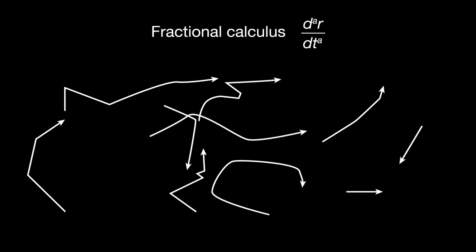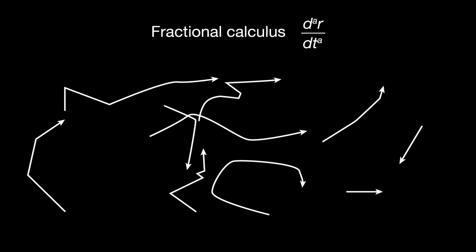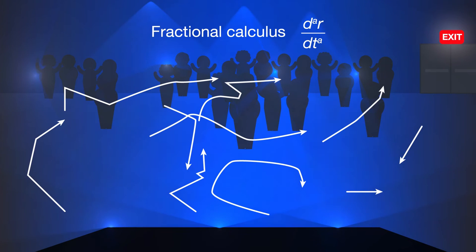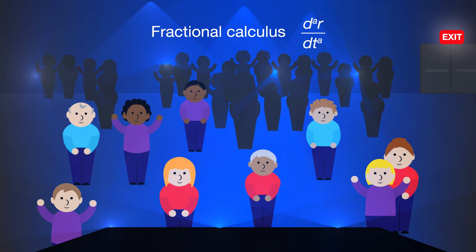This is where fractional calculus comes in. A generalized form of traditional integral calculus, fractional calculus comes pre-installed with a way to account for long-range interactions among particles or people. Each object in a fractional order model is given a memory that persists much longer than the short-lived interactions among particles.